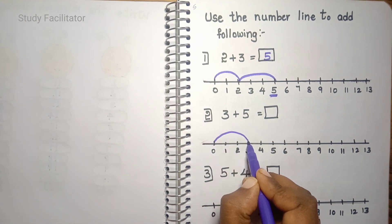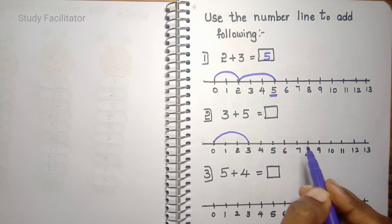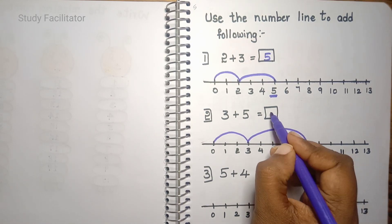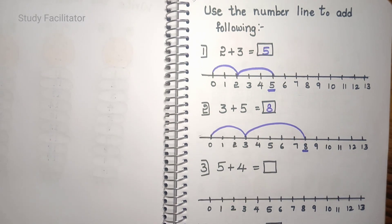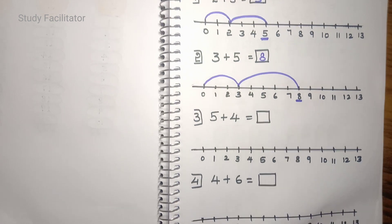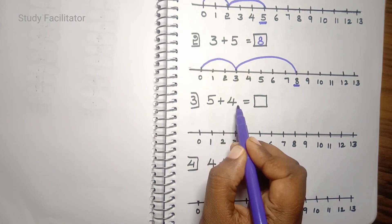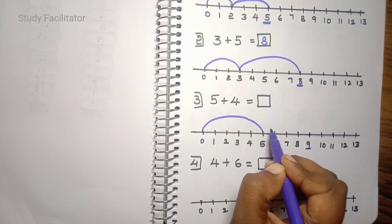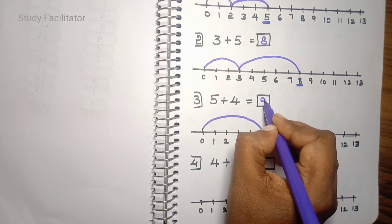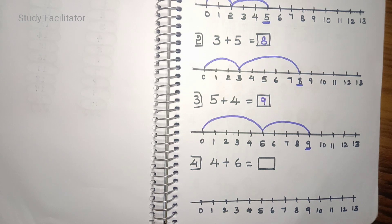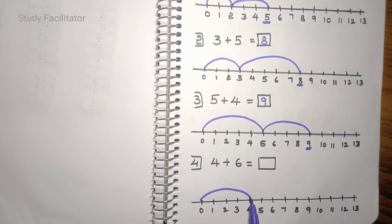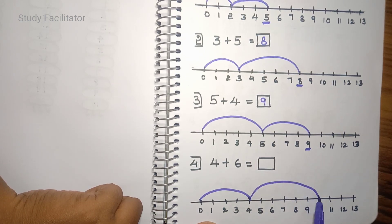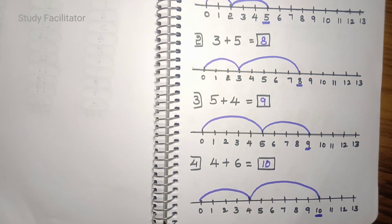Another example: 3 plus 5. We start at 0, 1, 2, 3, then count 1, 2, 3, 4, 5 — that is 8. 3 plus 5 is 8. Next example: 5 plus 4. We start at 0, 1, 2, 3, 4, 5, then count 1, 2, 3, 4 — that is 9. This is the number line addition method.